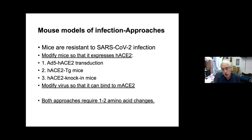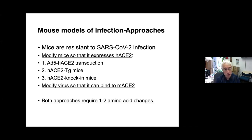Mice are naturally resistant to SARS-CoV-2 because of a fairly minor incompatibility between the surface spike protein of SARS-CoV-2 and the mouse ACE2, which is the receptor for the virus. There have been several approaches to make mice susceptible to the infection. One general approach is to modify mice so that they express human ACE2 — either exogenously via an adenovirus 5 vector, as a transgenic, or as a knock-in.